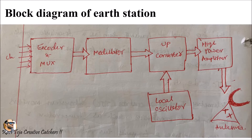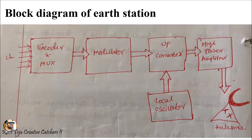The encoder and multiplexer is connected to a modulator, and the modulator is connected to an up converter. The up converter is sub-connected to a local oscillator, which is used for generating the frequencies required during the process. The up converter is then connected to a high power amplifier which amplifies the incoming weak signal and eliminates noise. This amplified signal is given to a transmitting antenna, which then transmits the signal to the required satellite or multiple satellites.